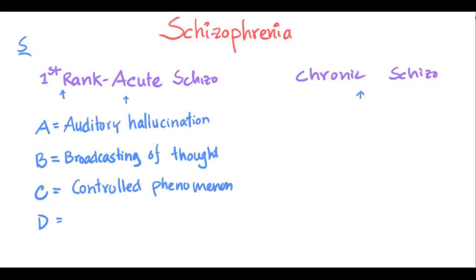The last one is D for delusional perception. You are seeing something normal but this normal thing is being perceived as something else — like you see a car approaching and you have a perception that this car is going to kill you one month later. So the A B C D of acute schizophrenia are: auditory hallucination, broadcasting or insertion/withdrawal of thought, controlled phenomenon, and delusional perception.